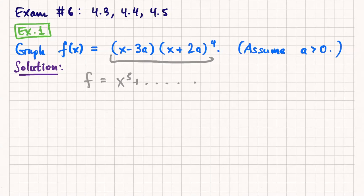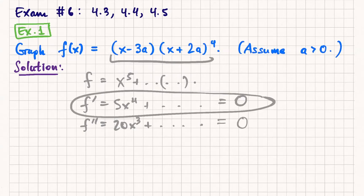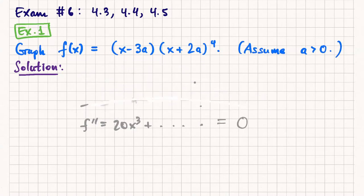Okay. So if I take the derivative, it's going to end up being a fourth degree polynomial. And if I take the second derivative, it's going to end up being a third degree polynomial. And not only that, all the coefficients are going to depend on a. So I would say expanding and taking the derivative is absolutely not the way to go.